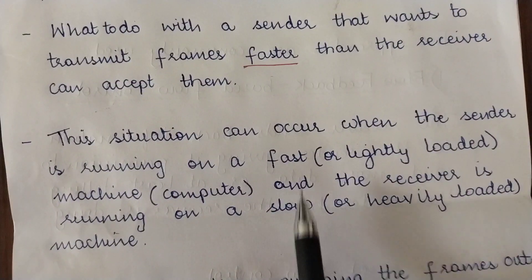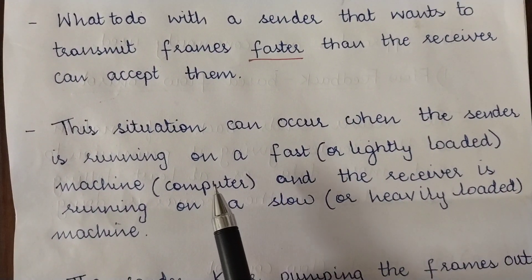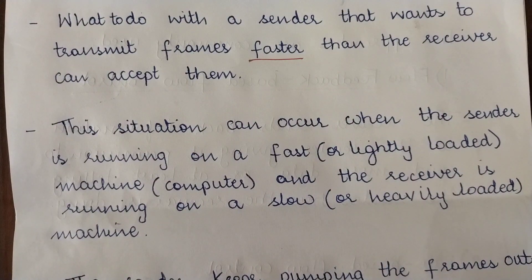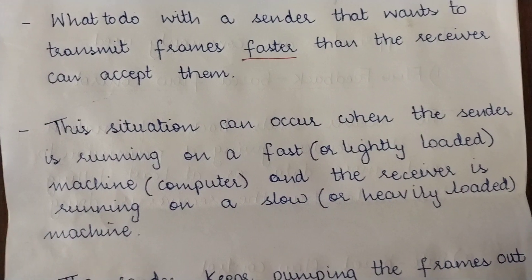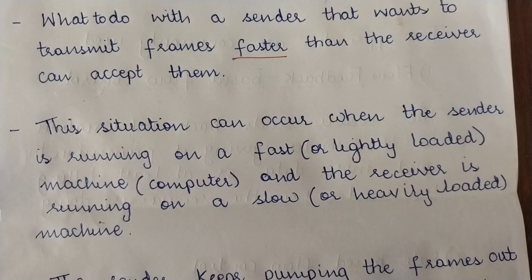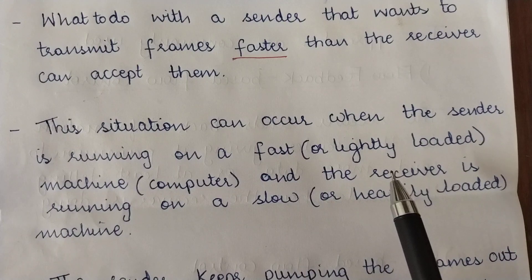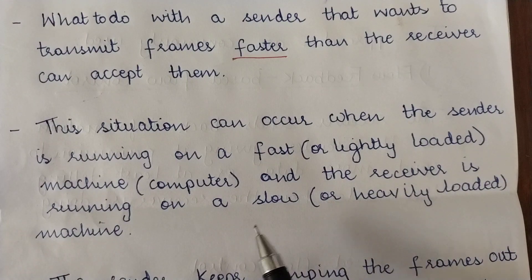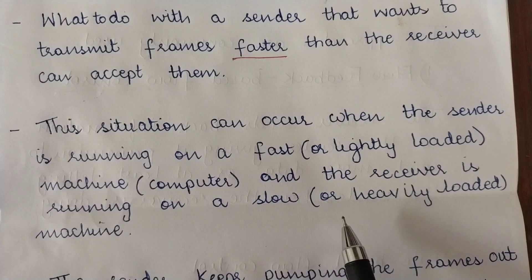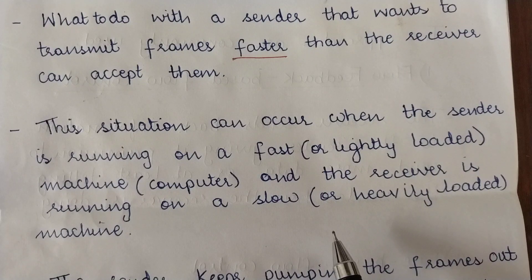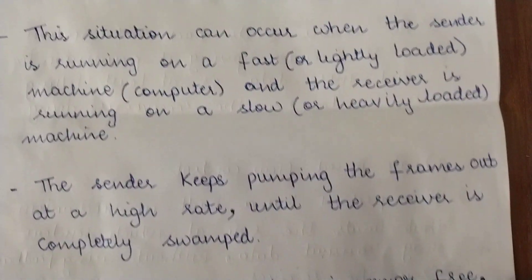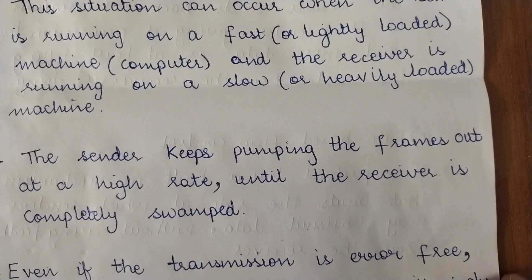This situation can occur when the sender is running on a fast machine — either because it has a high-speed processor or because it is lightly loaded, allowing the CPU to work very fast. The receiver, on the other hand, is running on a slow machine — either the processor itself is slow, or it is heavily loaded with lots of work, making it slow compared to the sender.